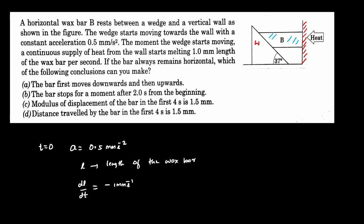The question asks which conclusions can you make: first, the bar first moves downwards then upwards; second, the bar stops for a moment after two seconds from the beginning. Also asked are the modulus of displacement and the distance traveled. This type of question usually gives a velocity expression as a function of time, and by observing it you predict when velocity becomes zero and whether velocity flips direction — here you must first create that velocity function yourself.